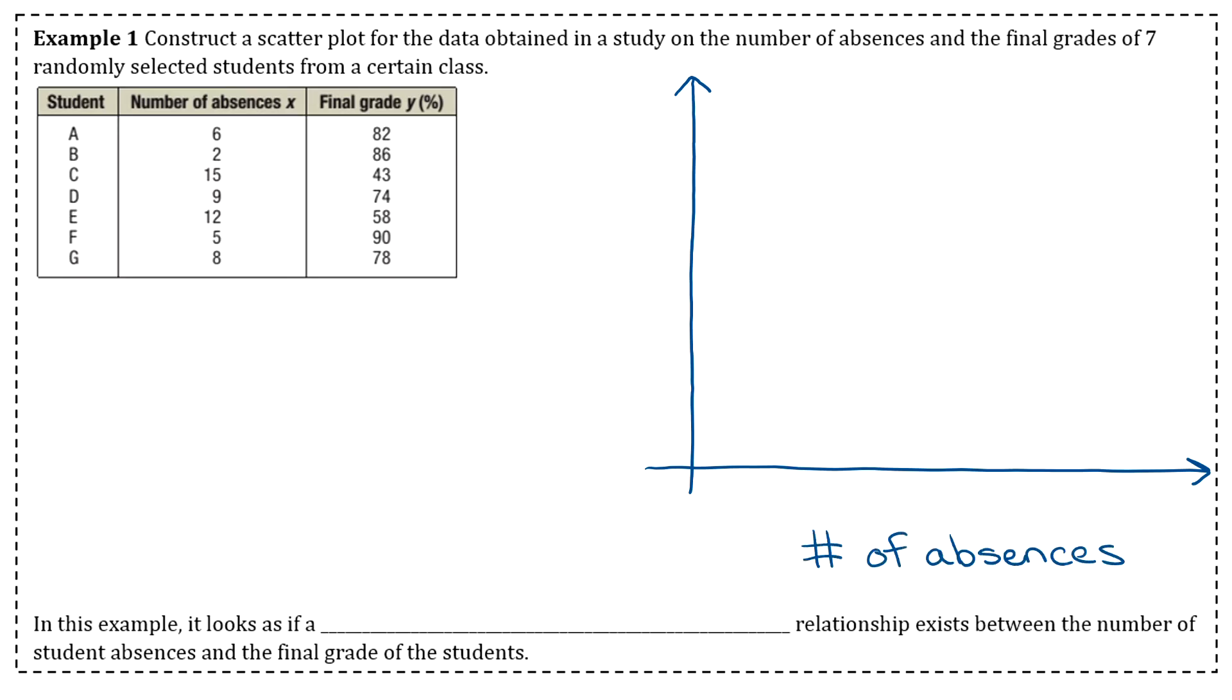I'll draw my coordinate plane and label my axes. The X-axis is the number of absences. You can pick your scale—I did by fives from 5 to 15. The Y-axis is the final grade. On this you can truncate your Y-axis, so you don't have to start at zero. I went by tens from 40 up to 90.